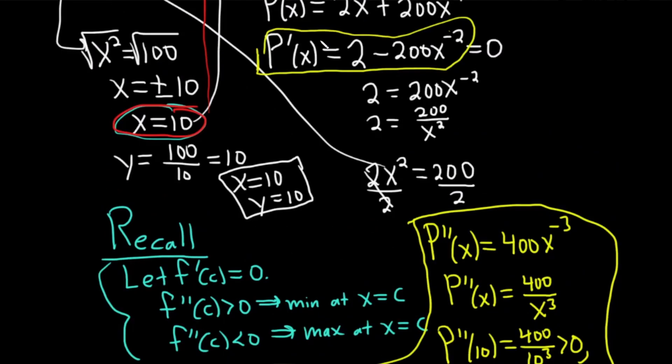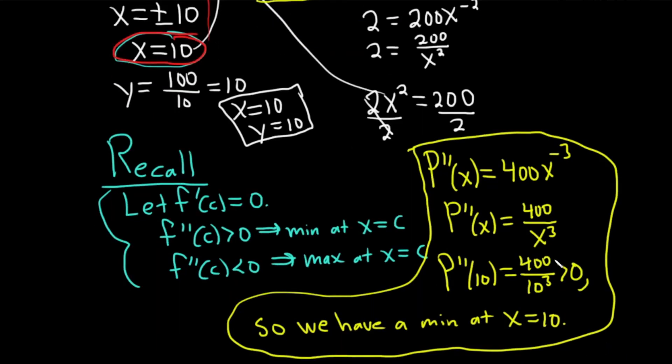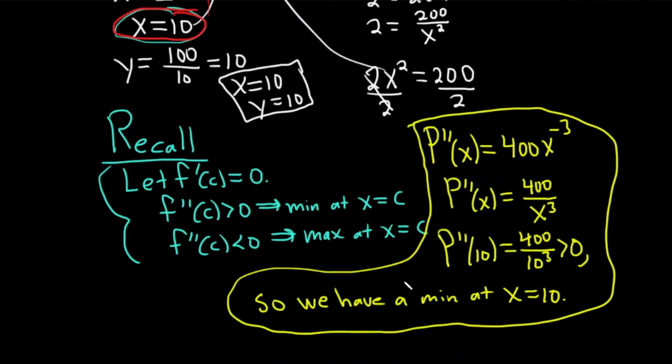So basically, you take the second derivative of P prime, you get P double prime, then plug in your answer, plug in your 10, and then in this case it's positive, so we do indeed have a minimum. Kind of a long problem, but once you know how to do it, it's not too bad.